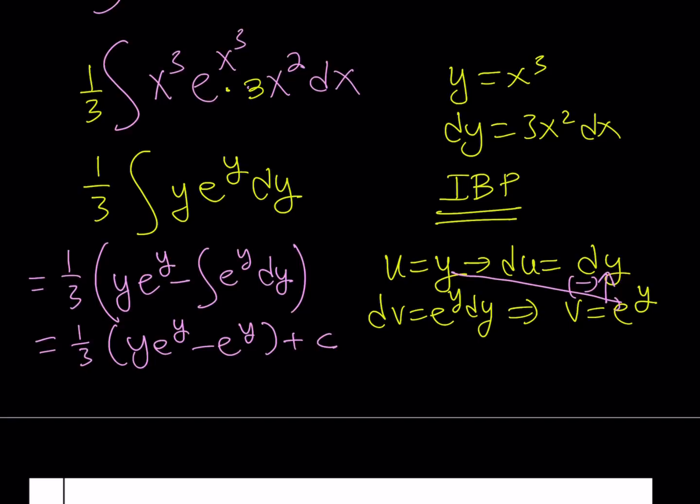Now, we're going to back substitute. We said that y is supposed to be x cubed. Let's replace y with x cubed. This gives us x cubed times e to the power x cubed minus e to the power x cubed plus c.